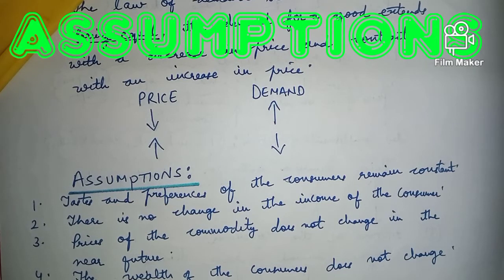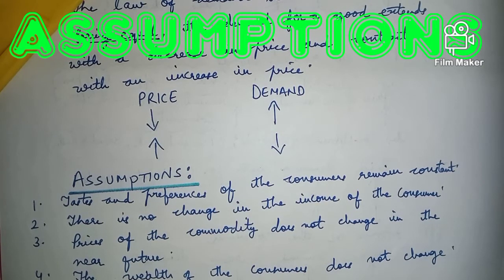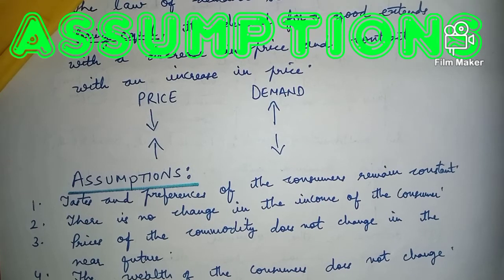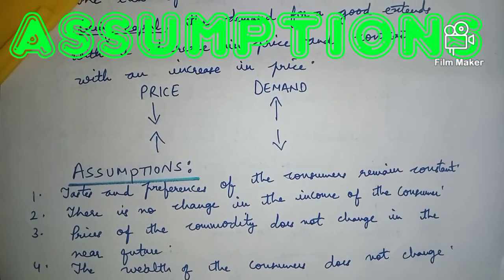Number three: prices of the commodity do not change in the near future. We are also assuming that in the near future, prices of the commodity will remain constant. In this law of demand, we assume that future prices will not change — they will remain constant.